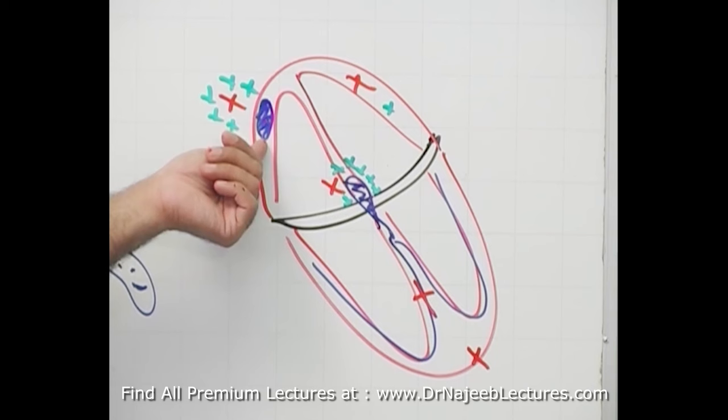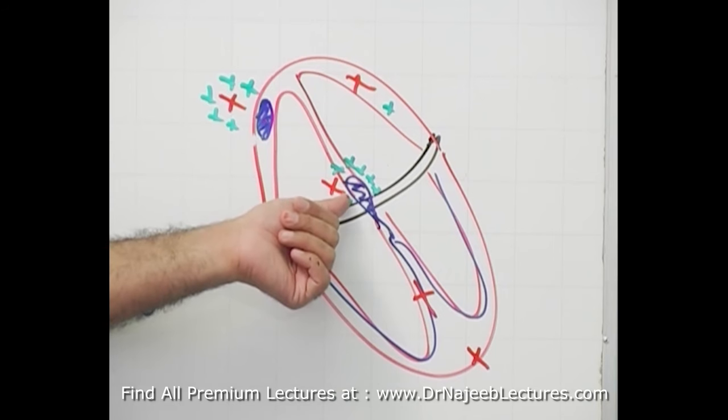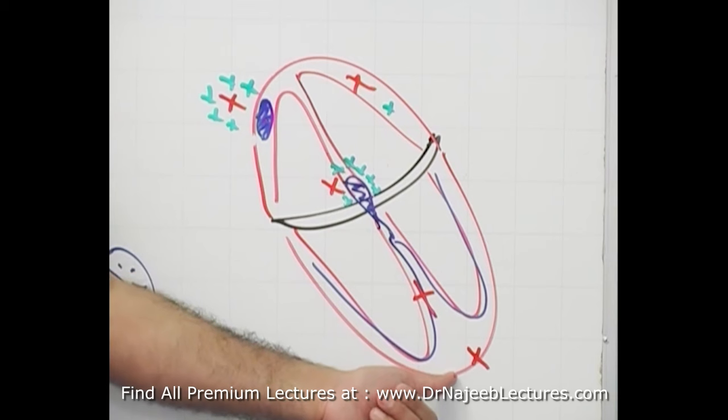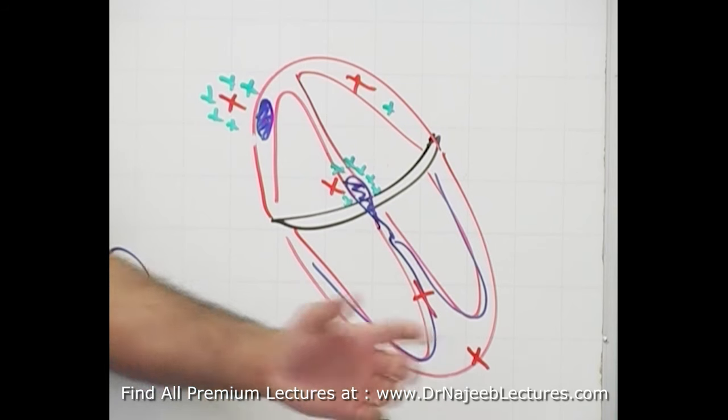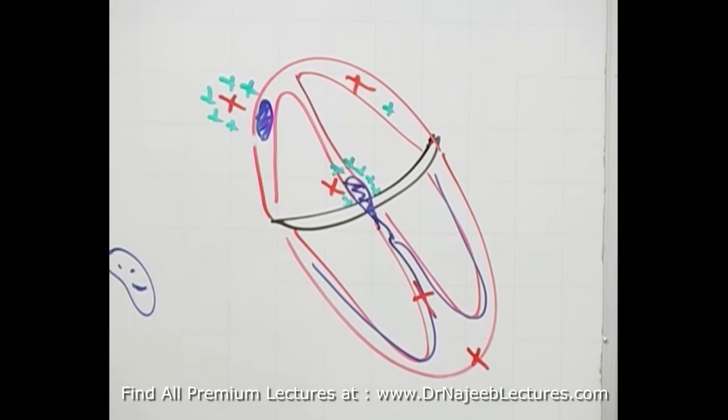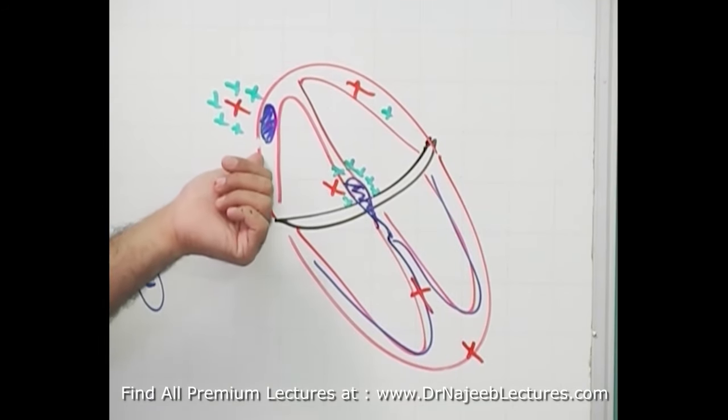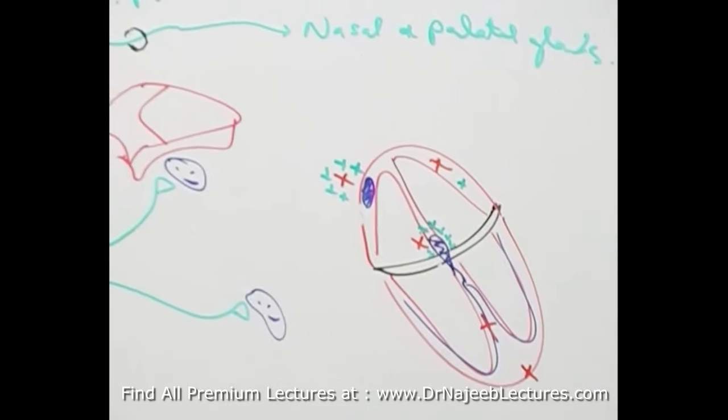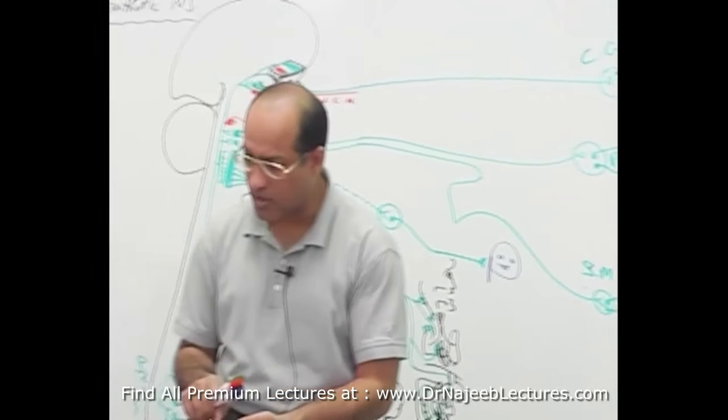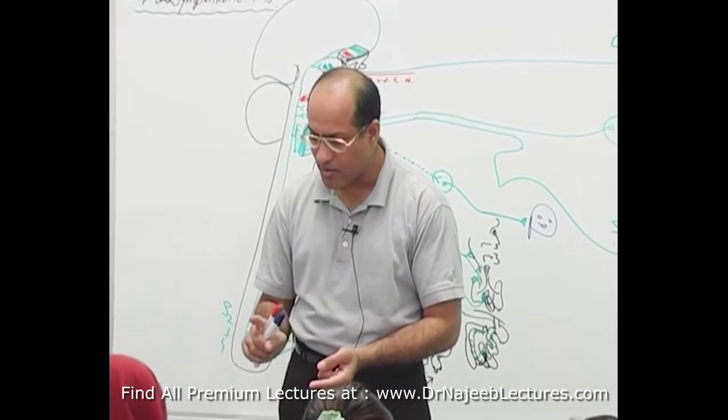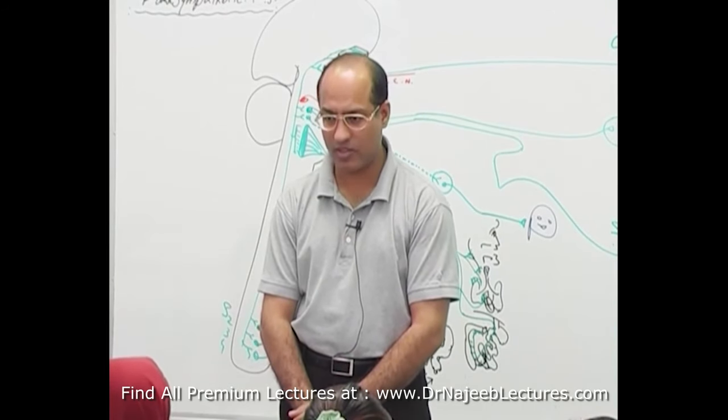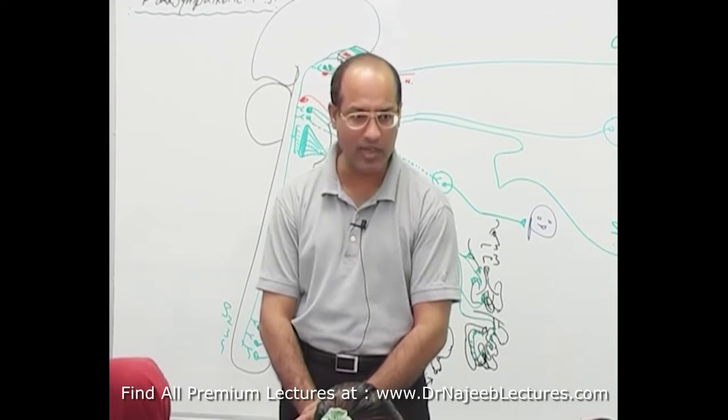When you have sympathetic drive, it will have positive chronotropic action, positive dromotropic action, positive bathmotropic action, and positive inotropic and clinotropic action. But when you have stimulation of parasympathetic nervous system, there is negative chronotropic action, negative dromotropic action, but don't tell anyone that vagal stimulation will end up into negative inotropic action. Sympathetic stimulation has positive inotropic action but parasympathetic does not have negative inotropic action.